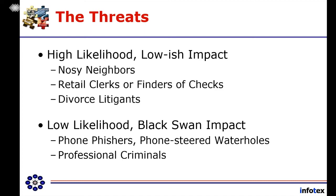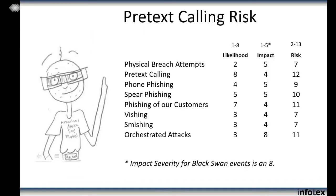When we look at social engineering as an attack vector, pretext calling is really way up high in the risk level. Most people see a risk of 10, 11, 12, or 13 as high risk. Spear phishing is definitely still a risk. Phishing of our customers is a little bit higher because the likelihood of them clicking a link is higher. But what I'm frightened about is the orchestrated attack for black swan events — we're hoping we stay off the radar of the Russian Business Network and other crime organizations.